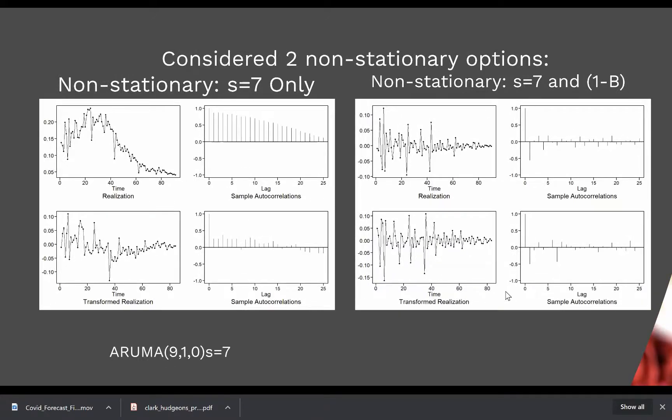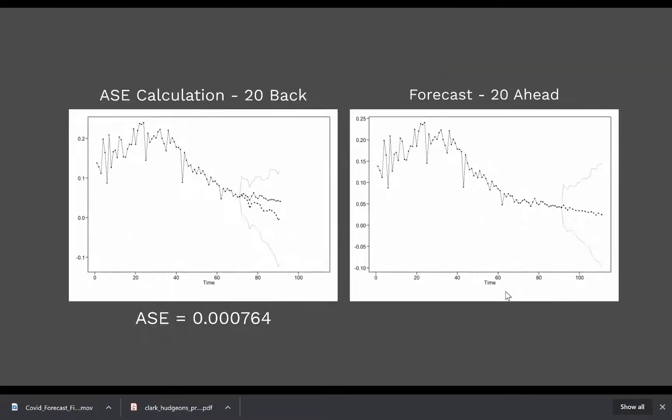Finally we also added in some seasonality with an S equals 7 component on top of the 1 minus B component. The transformation on your right, that's the final transformed realization, ended up with an ARIMA 9,1,0 and here's the ASE calculation on that at 7.6 times 10 to the negative fourth.